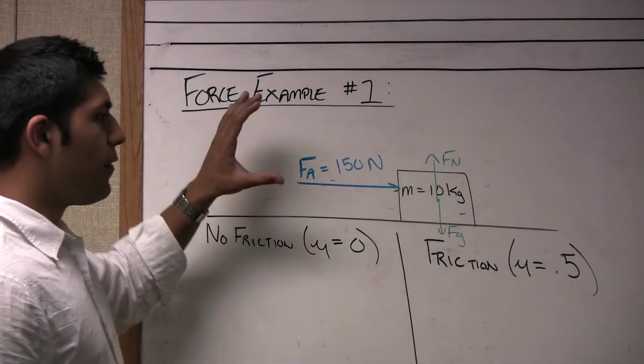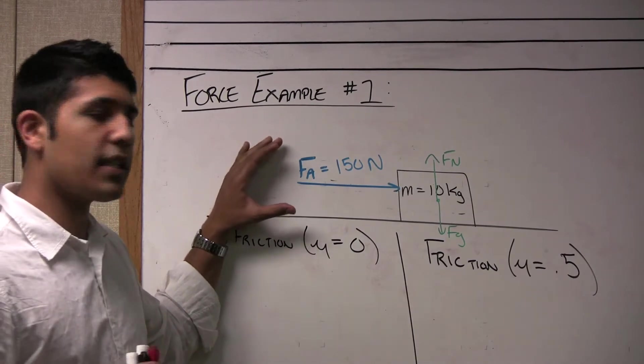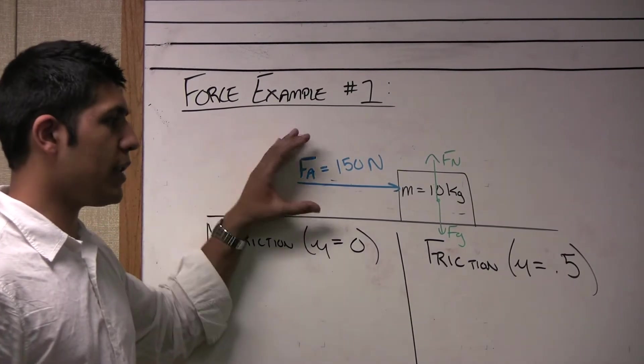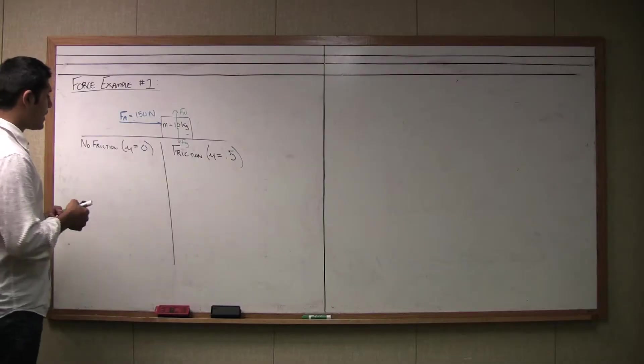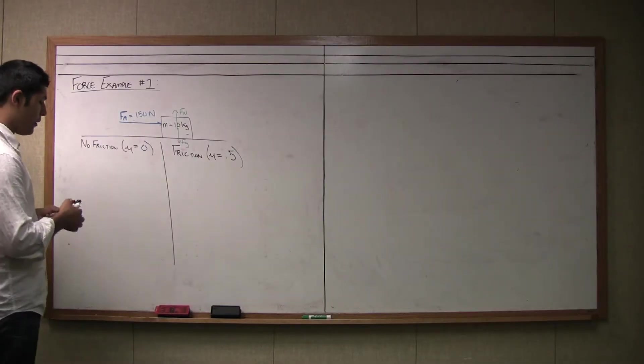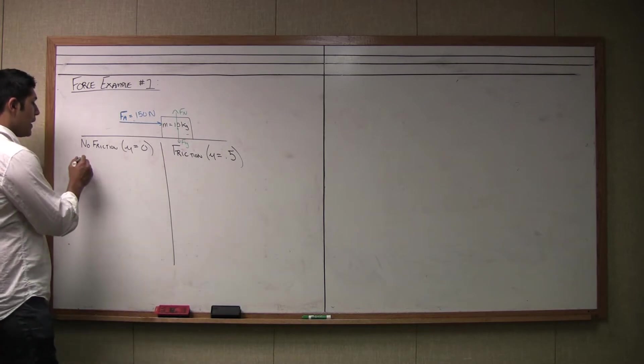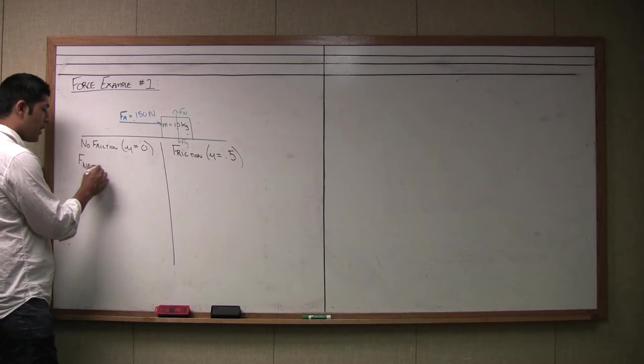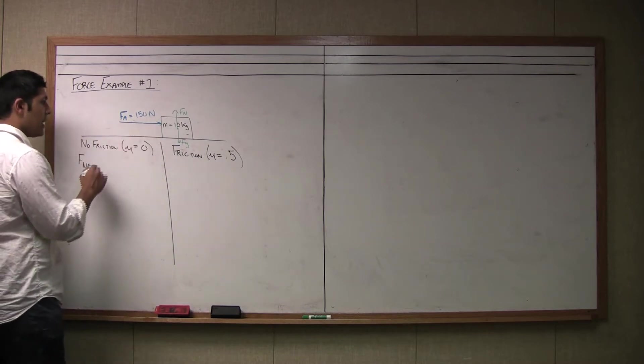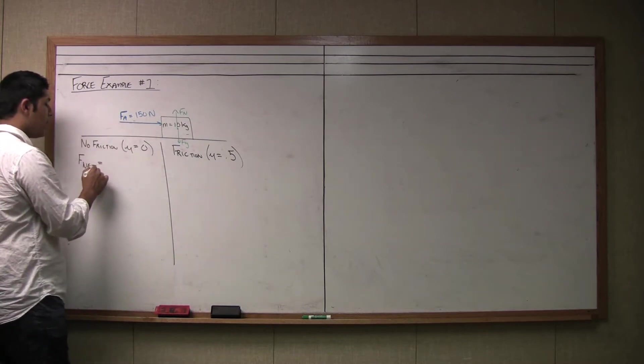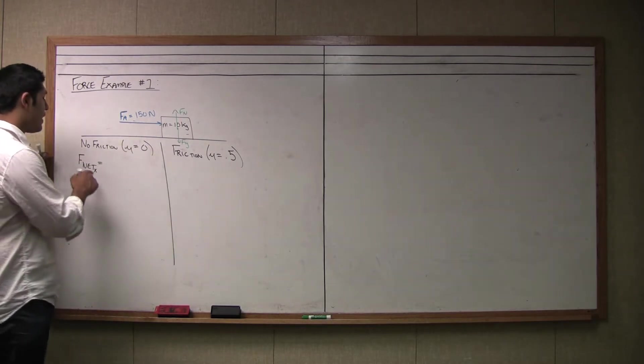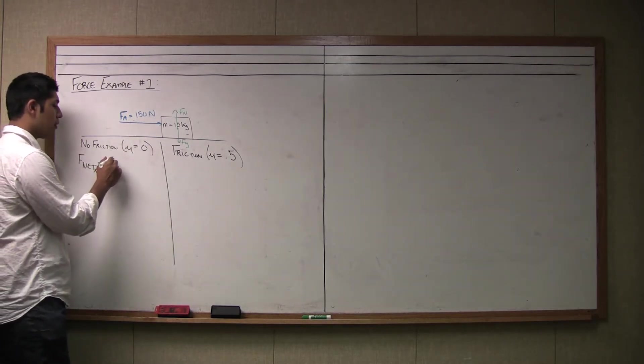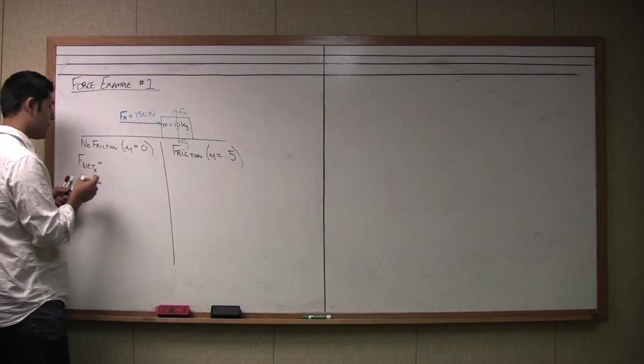The first thing that you have to do as a successful physics student is draw the appropriate force diagram. You have to label the forces that are acting on the mass. The next step is to write what we call an F net equation. The net force is all of the forces added together that are acting on the mass. In this case, the only F net that we are concerned with is in the x direction and so we write F net x is equal to the applied force, Fa.